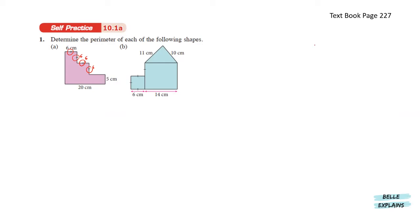Determine the perimeter of each of the following shapes. So when we see these lines, it indicates that these tiny sides are the same length. So for this part here, which is unknown, let's call it x.